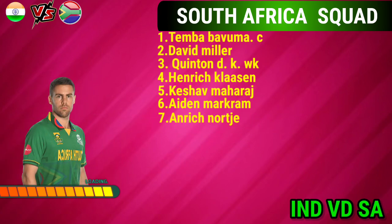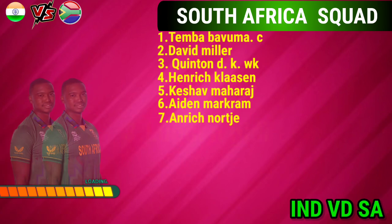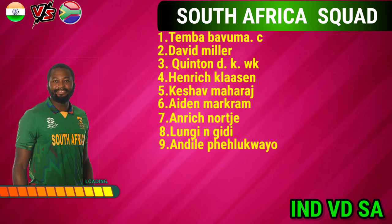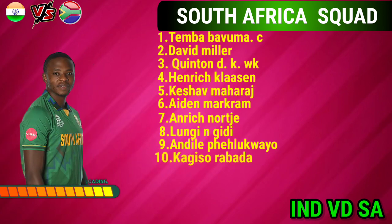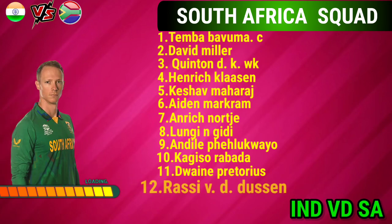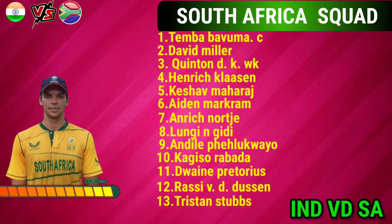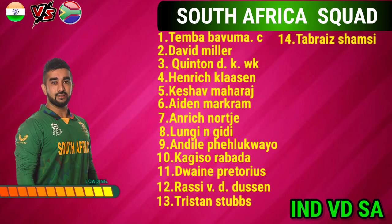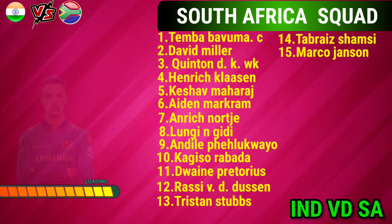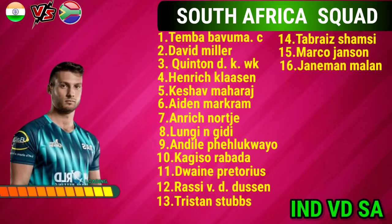No. 7 Anrich Nortje, Fast Bowler. No. 8 Lungi Ngidi, Fast Bowler. No. 9 Andile Phehlukwayo, All-Rounder. No. 10 Kagiso Rabada, Fast Bowler. No. 11 Dwaine Pretorious, All-Rounder. No. 12 Reeza Hendricks, Right-Hand Batsman. No. 13 Tristan Stubbs, Right-Hand Batsman. No. 14 Tabraiz Shamsi, Spin Bowler. No. 15 Marco Jansen, All-Rounder. No. 16 Janneman Malan, Right-Hand Batsman.